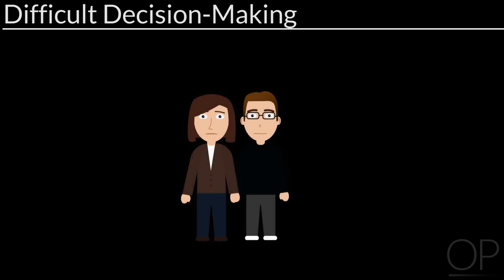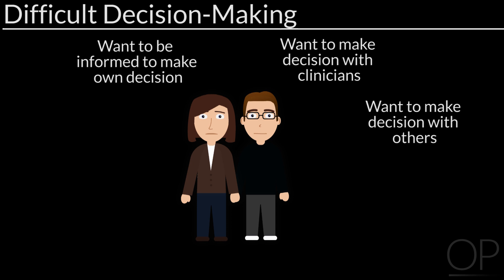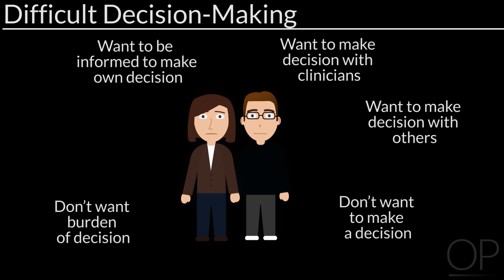You can ask parents: 'What can we do for you and Adrian?' When hard decisions need to be made, some parents don't want to take them. You can ask: 'Some parents want us to inform them so they can decide for Adrian. Others want to decide with us. Others want a recommendation from us. What kind of parent are you?' Some parents in our studies said it helped when the doctor asked: 'If you were Adrian, what would you want if you were him?' — instead of 'What would you want as Adrian's mother?'